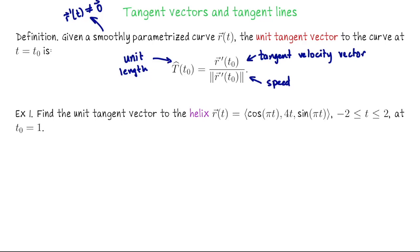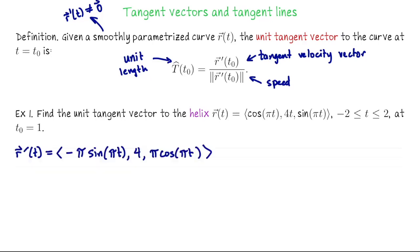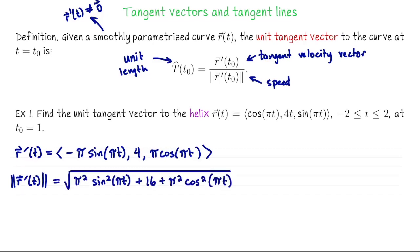We're going to compute T-hat in general and then at the specific moment t₀ = 1. The first thing we need is to compute the velocity vector R'. That's just coordinate-by-coordinate differentiation, so R'(t) = (−π sin πt, 4, π cos πt). We'll divide by the speed, which is the magnitude of R', giving us the square root of π² sin² πt + 16 + π² cos² πt. Notice π² sin² πt + π² cos² πt simplifies, giving us just the square root of π² + 16.